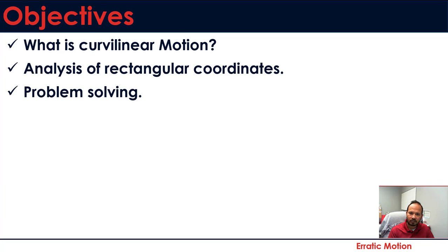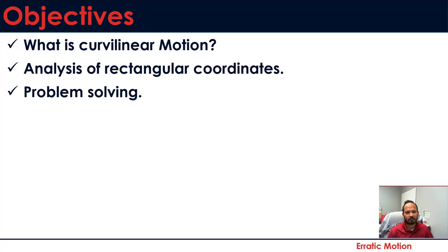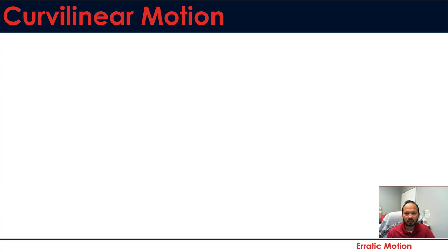There are two other coordinate systems: normal-tangential and cylindrical or polar coordinate systems. But today we're going to focus only on the rectangular coordinate system, and then we're going to solve a problem.